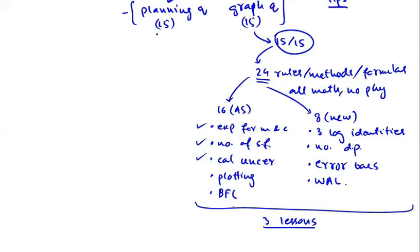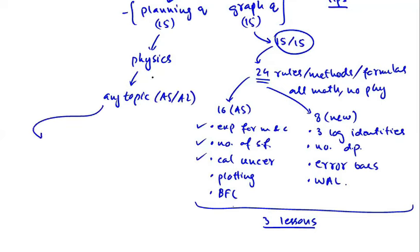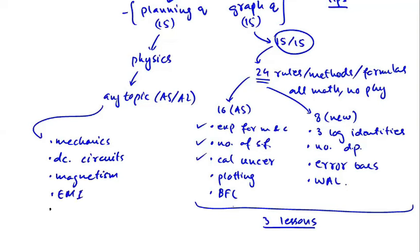The planning question is a relatively difficult question. To do it, you need sound knowledge and understanding of principles and laws of physics. Moreover, the planning question can come from any topic — from AS or A2 syllabus. Common topics include mechanics, DC circuits, magnetism, EM induction, and alternating current. We will be doing one planning question on mechanics, two on DC circuits, one on magnetism, one on EM induction, and one on AC in lessons four and five.